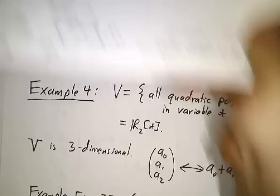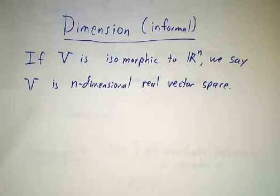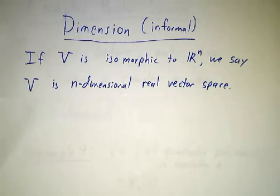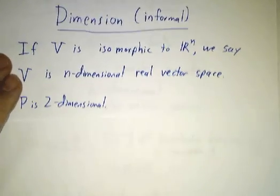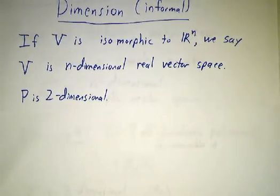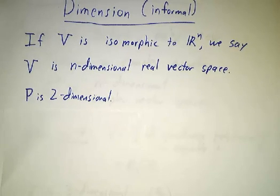The next thing we want to know about vector spaces is how big they are. If something is isomorphic to Rⁿ, we say it's n-dimensional, n-dimensional real vector space. So our plane P was two-dimensional because we could describe arrows with two numbers, in other words, with an element of R².